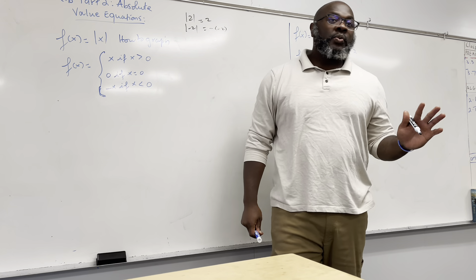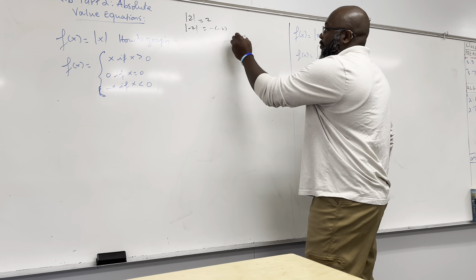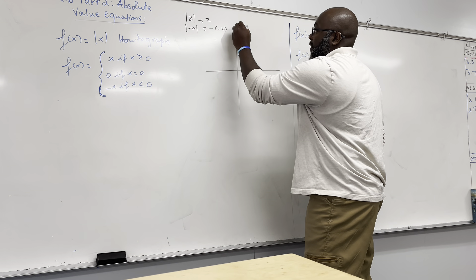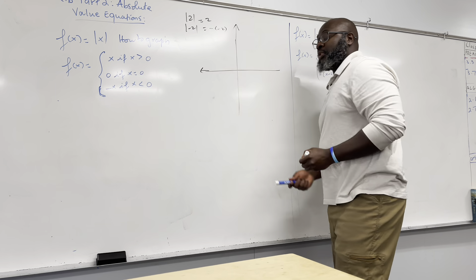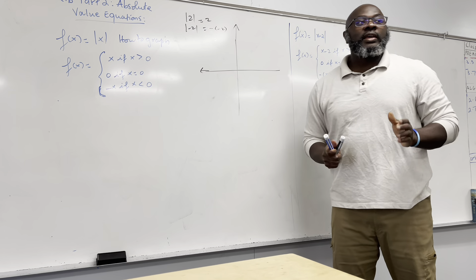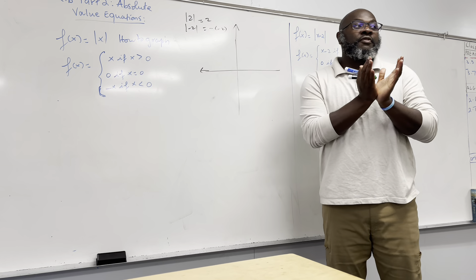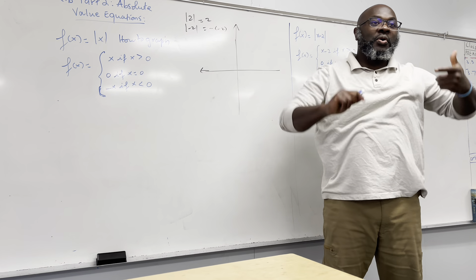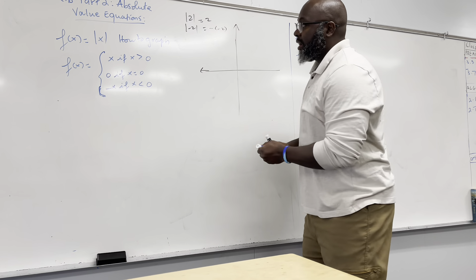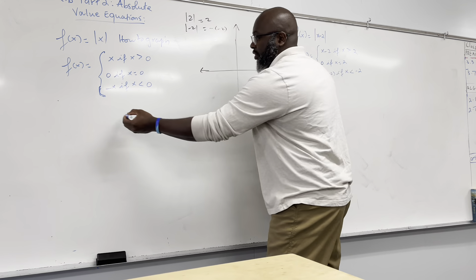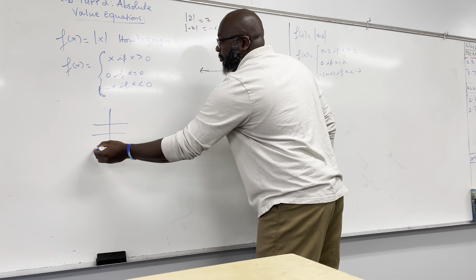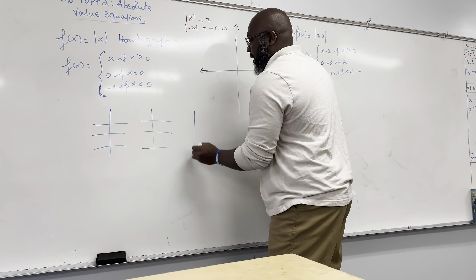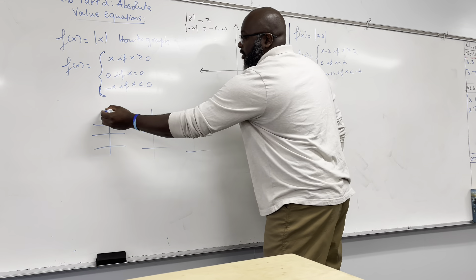Now this is where some of us get a little confused. We have to graph this function. The absolute value function is a fun function because it always looks like a V — or a reversed V. How many tables are we going to make? Three tables.